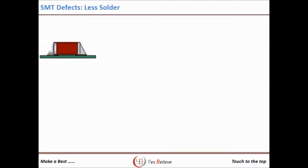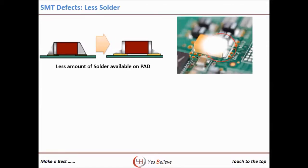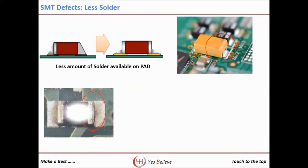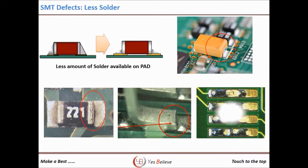The less solder defect is related to the solder paste printing process. The amount of solder paste is not sufficient to make proper contact between the component and the PCB pad. The reason is similar to that of missing solder.